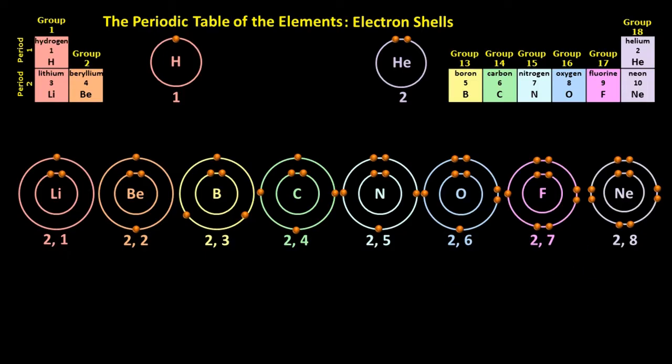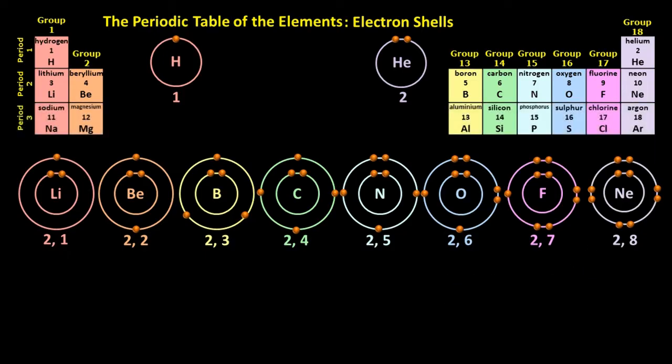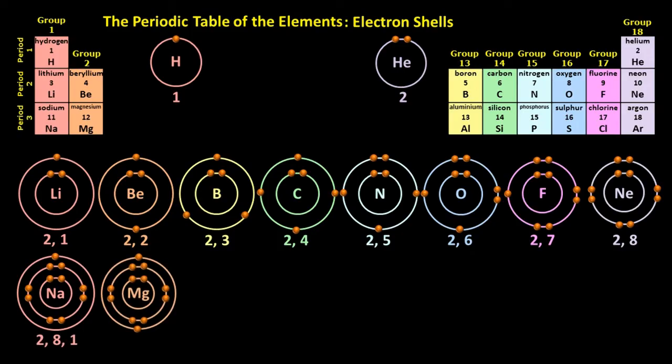Let's now move on to period three of the periodic table. Sodium needs three shells to fit all of its eleven electrons. Its electron configuration is two, eight, one. Magnesium has twelve electrons and an electron configuration of two, eight, two.